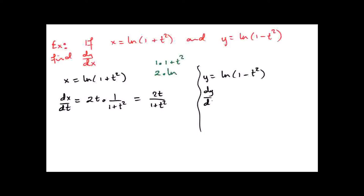What about dy dt? My two functions are 1 minus t squared (first function) and ln (second function). Differentiate them: minus 2t multiplied by 1 over 1 minus t squared. The minus 2t comes from differentiating 1 minus t squared, and 1 over 1 minus t squared from differentiating log. So dy dt equals minus 2t over 1 minus t squared.